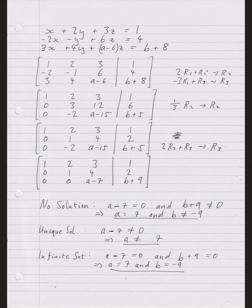Let's look at our last row and see what kinds of solutions we can have. For no solution, I need zero equals something that's not zero — so if the left side here is zero and b plus nine is not zero, there's no solution. That means a minus seven equals zero and b plus nine is not zero, so a must be seven and b must not equal minus nine. For a unique solution, all I need is for a minus seven to not be zero — meaning a is not equal to seven.